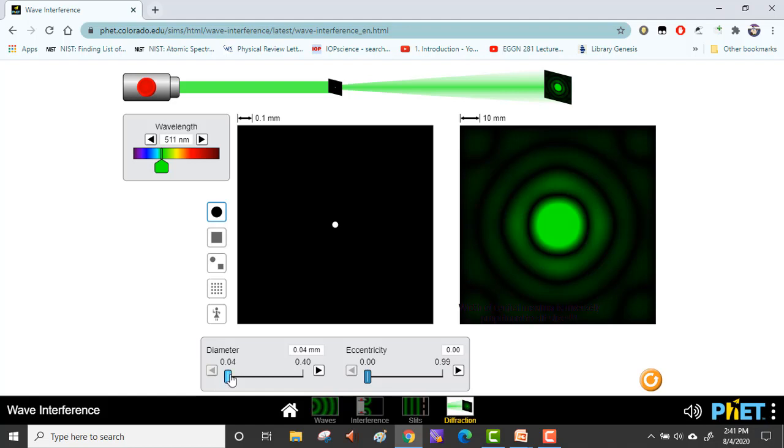Therefore, we conclude that the width of the central zero-order maxima in case of diffraction is inversely proportional to the width of the aperture.